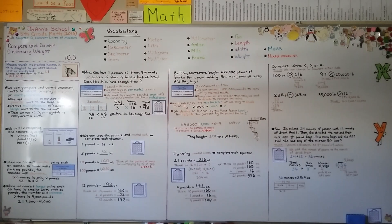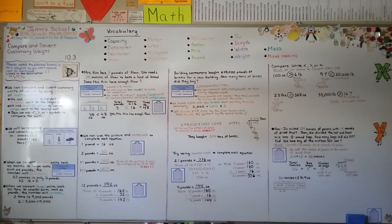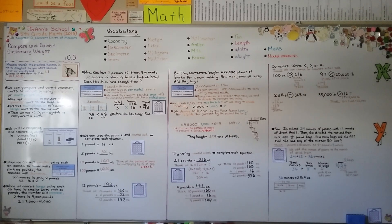Remember: when converting smaller units like ounces to larger units like pounds or tons, the number decreases and we divide. When converting larger units like tons to smaller units like pounds, the number increases and we use multiplication. Our next lesson, 10.4, will cover multi-step measurement problems. I hope you're having a really good day, and I hope you'll join me next time!